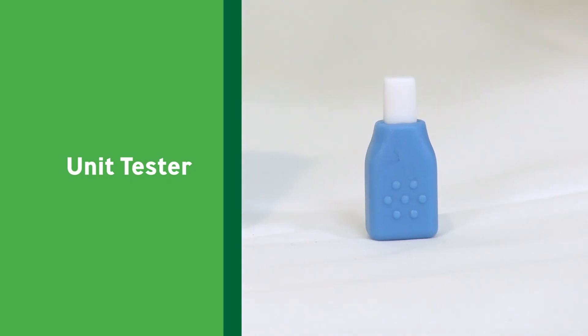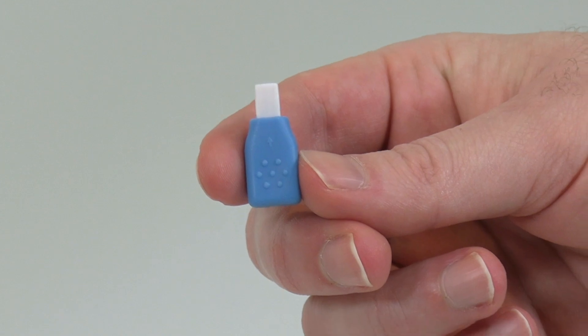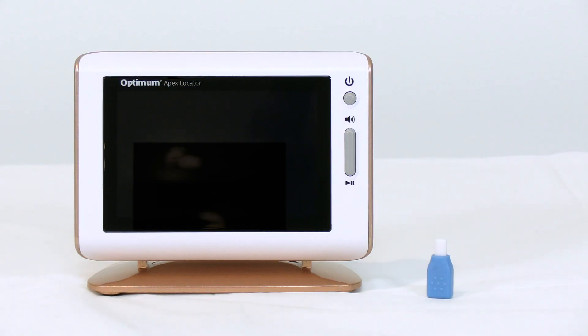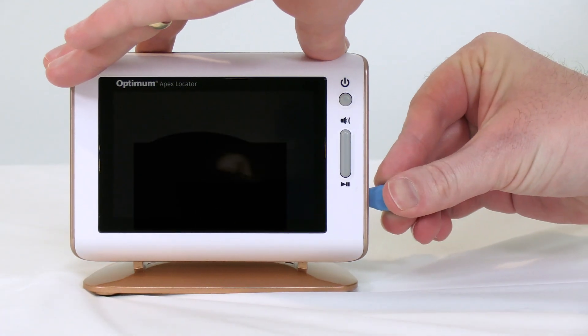Unit Tester. Using the tester, check if the device is in proper working order. First remove the measuring wire from the socket on the right side of the unit and ensure the unit is powered down. Next insert the tester.